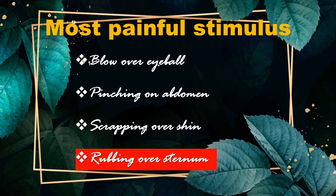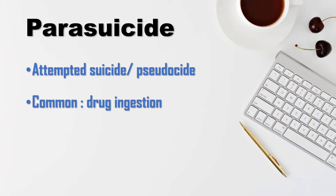Rubbing one's knuckles over the patient's sternum is considered the most painful stimulus — it hurts more than pressing the eyeball and is potentially less dangerous. Next, parasuicide: parasuicide is also known as attempted suicide or pseudocide. It is nothing but a cautious or impulsive act just to get rid of an intolerable situation — for example, drug ingestion, which is the commonest form. Most persons are psychologically disturbed; it is just an attempt and they won't die.